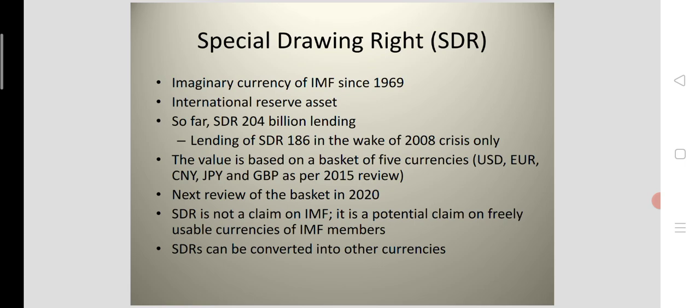When member nations access the SDR lending facility of the IMF, the SDRs are an imaginary currency — there is no currency note for SDR. The value of SDR is determined on the basis of five currencies in the currency basket: the US dollar, euro, Chinese yuan, Japanese yen, and Great Britain pound sterling, as per the 2015 review. SDRs can be converted into any currency in the world based on the SDR exchange rate.